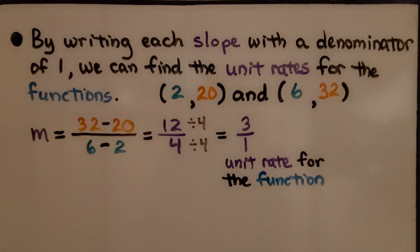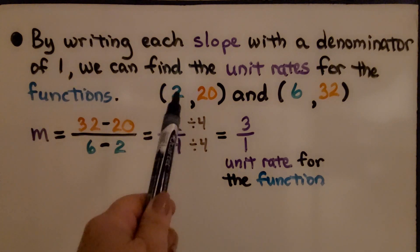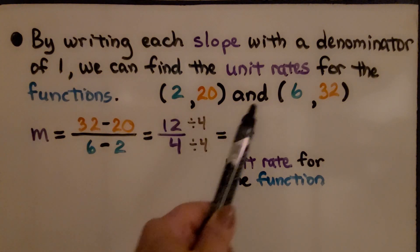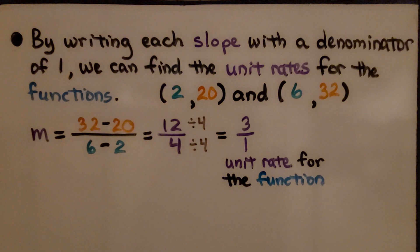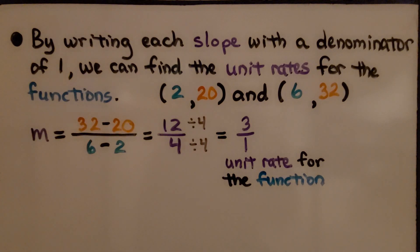By writing each slope with a denominator of 1 — that would be writing it as a fraction — we can find the unit rates for the functions. If we have the ordered pairs (2, 20) and (6, 32), we apply the slope formula to find the unit rate for the function.